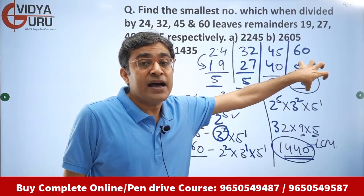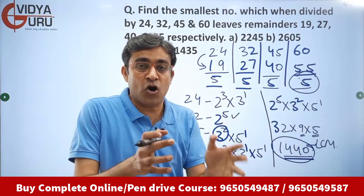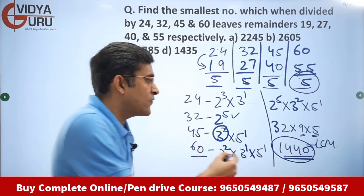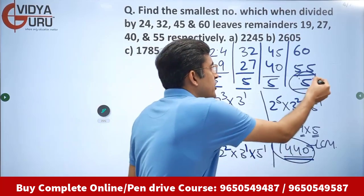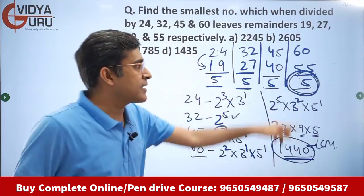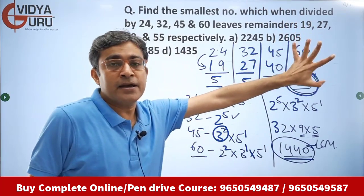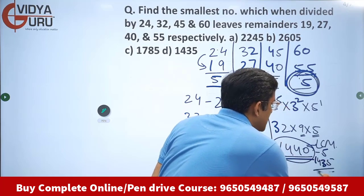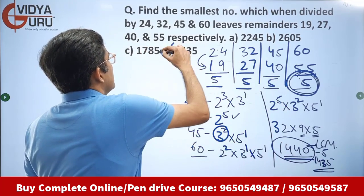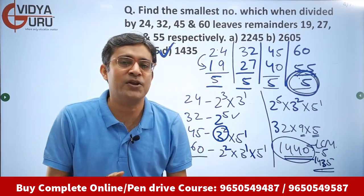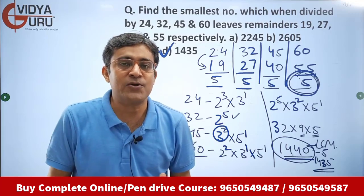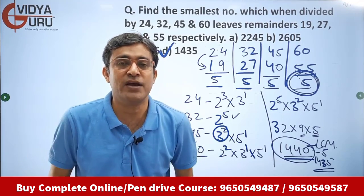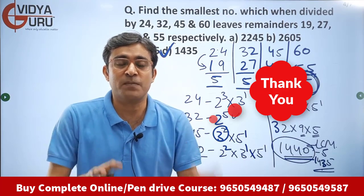Now here is the smart method: this common gap of 5 will have to be subtracted from the LCM to arrive at the answer. So from the LCM 1440, subtract the common gap between divisor and remainder. The common gap was 5, so subtract 5. The answer is 1435 — option D. If you liked today's video, press the like button, become a part of our live online classes and video courses. Share the video with your friends. God bless you all. Thank you so much.